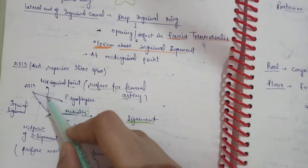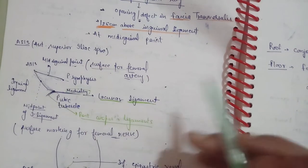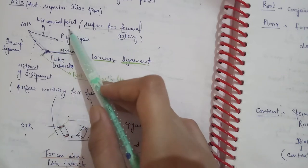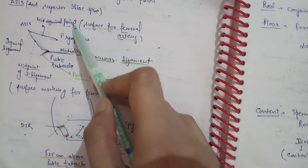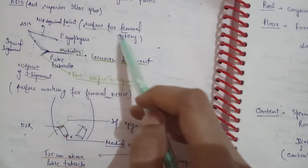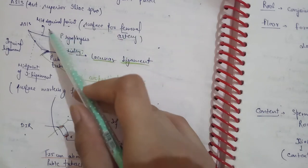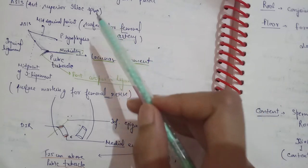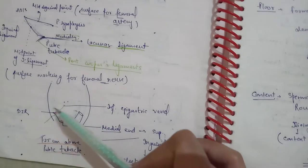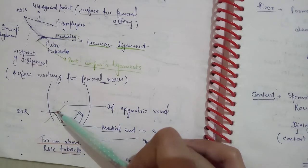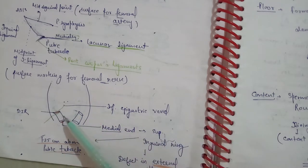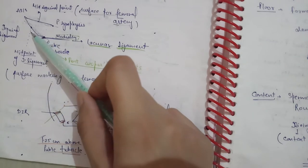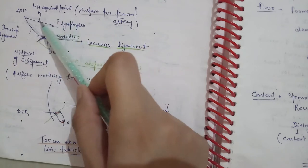Now let's talk about surface markings. The mid-point of the inguinal ligament is the surface marking for the femoral nerve. The mid-inguinal point is the surface marking for the femoral artery. The deep inguinal ring lies just lateral to the inferior epigastric vessels. So remember: deep inguinal ring is lateral to the inferior epigastric vessels, mid-point of the inguinal ligament marks the femoral nerve, and the mid-inguinal point marks the femoral artery.